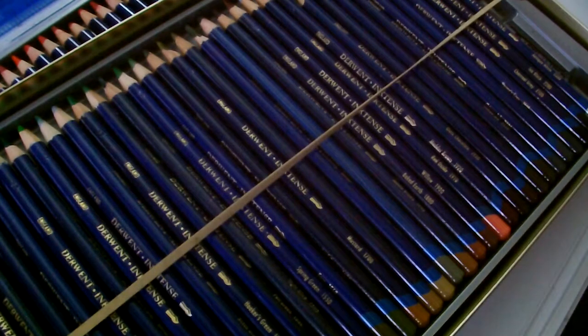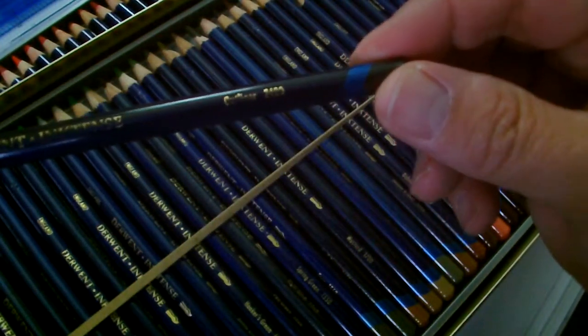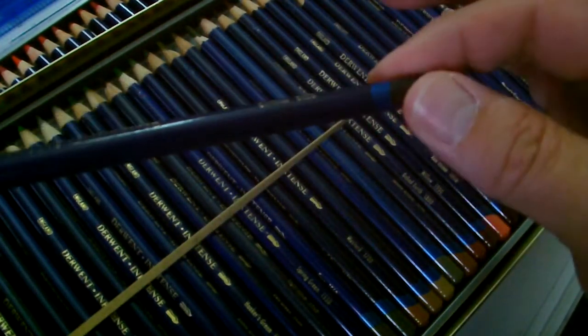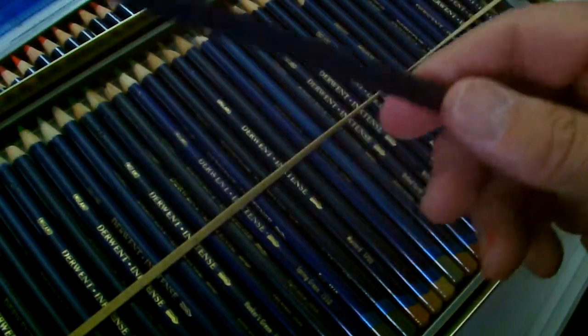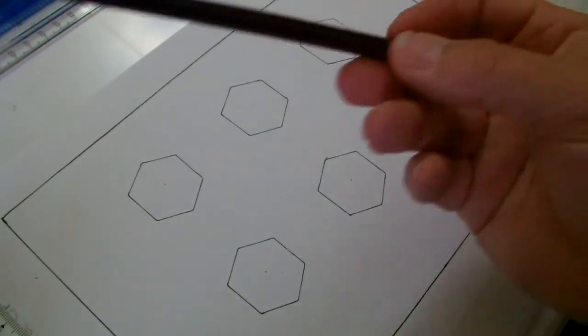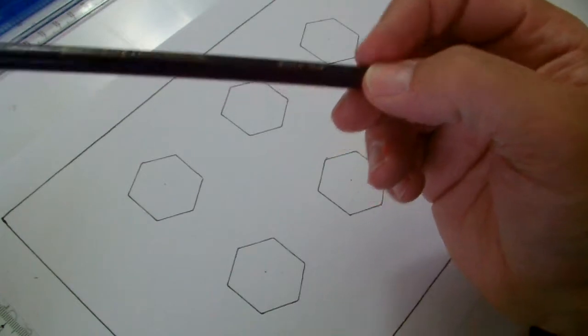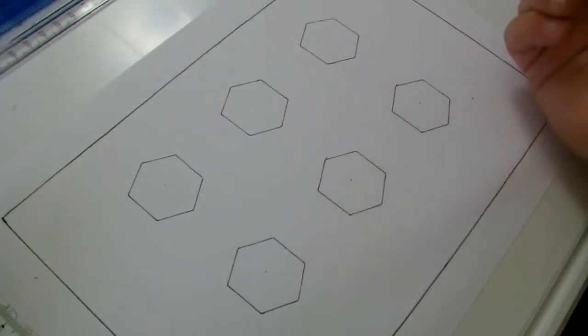In Derwent's range of pencils, on the end here they've got this particular one and it's called the outliner. Now that's a waterproof one. Now the reason why it's waterproof, with these inktense blocks and pencils we use water over the top. They act like watercolor paints but because this is waterproof we can use it as an outliner or a shader.